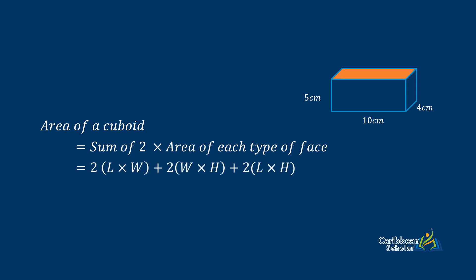Example time. So we have a width of 10 centimeters, a length of 4 centimeters, and a height of 5 centimeters. We want to find the area of this cuboid, so we need to find the sum of two times the area of each type of face. So we have two by length by width plus two by width by height plus two by length by height.